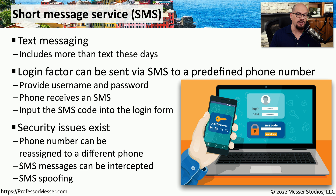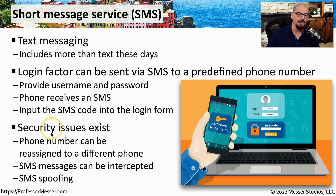SMS is perhaps not the most secure form of authentication factor because there are ways for a third party to gain access to that authentication code without having your phone. One method is that an attacker will contact your phone company and have them reassign your number to their phone — then whenever the SMS message is sent out, it goes to the attacker's phone instead of yours. Attackers can also spoof the source of an SMS message or intercept the message being sent to you, which is why some organizations prefer using a secure app on their smartphone instead of SMS.